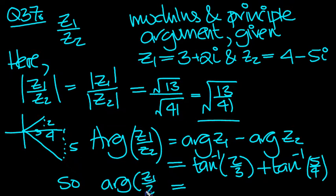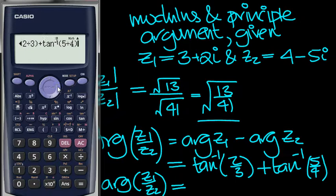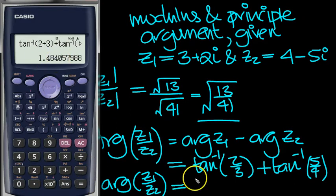So we can just put, so arc z1 over z2, the principal argument equals. And then we can tap it in the calculator, which I've already done. Arc tan 2 thirds, plus arc tan of 5 over 4, equals 1.48 radians.